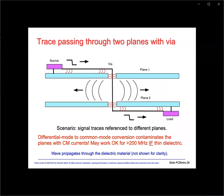Here's a case where we will run into trouble if we don't define an explicit return path for the displacement current and field energy. The signal trace runs between two planes through a via, but there's a gap down to the second plane where it continues on to the load. The displacement return current no longer has a defined return path back to the source, so this causes the electromagnetic wave to leak and start propagating in both directions within the dielectric space between the two planes. This can excite the PC board to resonate, couple to other signals occupying the same dielectric space, and cause board edge radiation between the two planes.